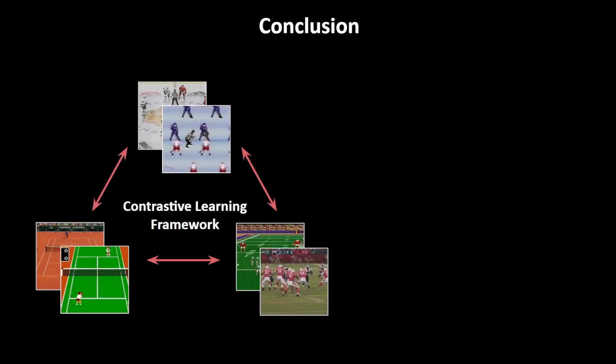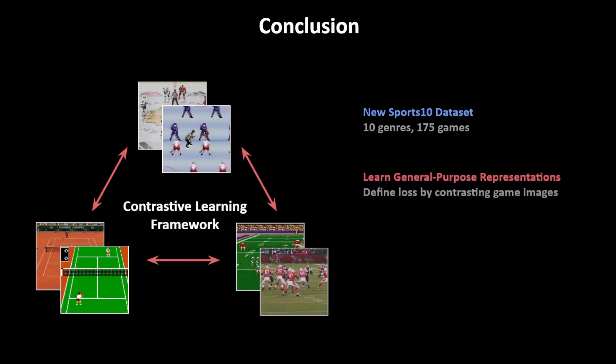To conclude, in this paper we first introduce a new Sports10 dataset focusing on including a graphically diverse set of games. Then, we lay out the contrastive learning framework to train an encoder on this dataset. Finally, we show how this framework is best equipped to tackle the domain gap challenges and gives game representations that generalize well to graphically diverse sets of games.